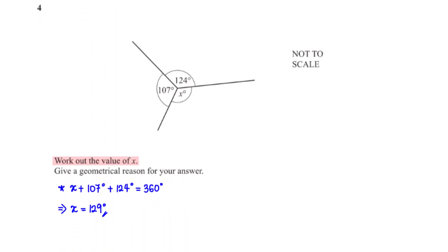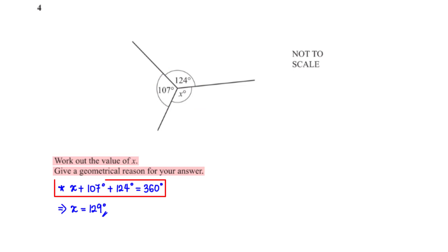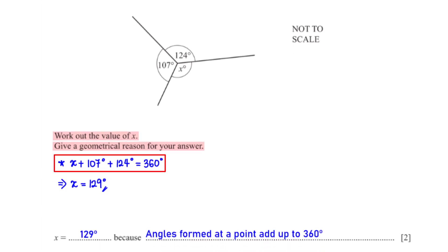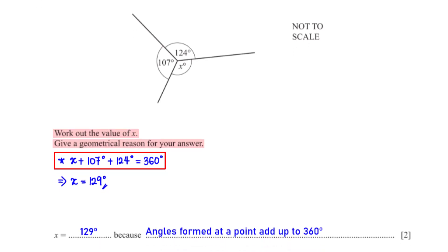Work out the value of x, giving a geometrical reason. Angles formed at a point add up to 360°, so we have x + 107 + 124 = 360. Making x the subject gives x = 129°.